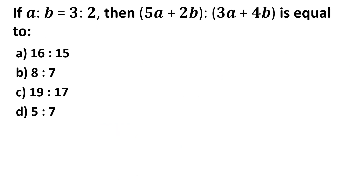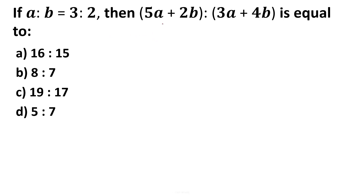If A:B = 3:2, then find (5A+2B)/(3A+4B). Just take A = 3 and B = 2 directly from the ratio. Numerator: 5×3 + 2×2 = 15+4 = 19. Denominator: 3×3 + 4×2 = 9+8 = 17. So the answer is 19:17.